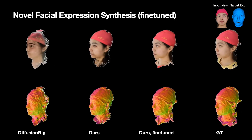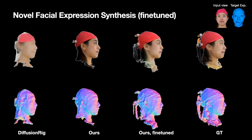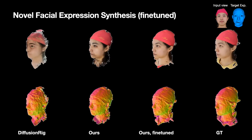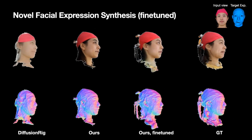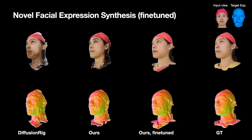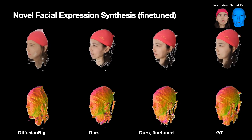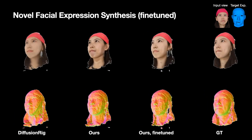We fine-tune our method on 16 views of the test subject in neutral expression and compare the fine-tuned model with Diffusion Rig. Our fine-tuned model improves the resemblance slightly compared to the results with a single input image and produces images with better fidelity compared to the baseline.